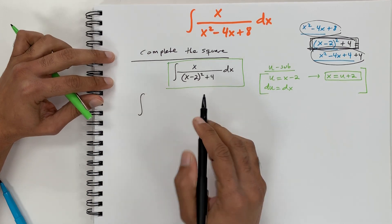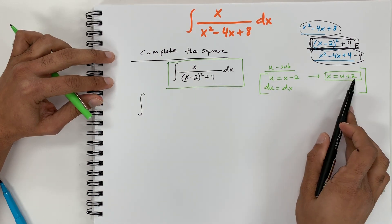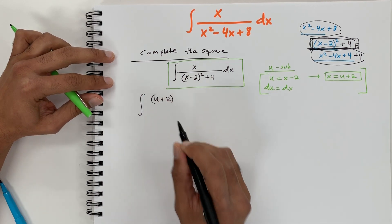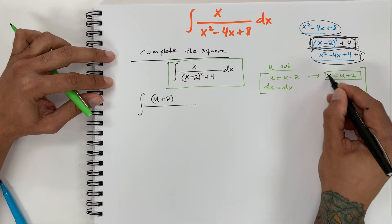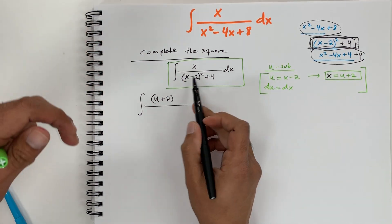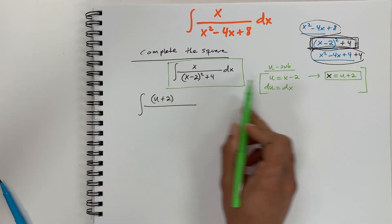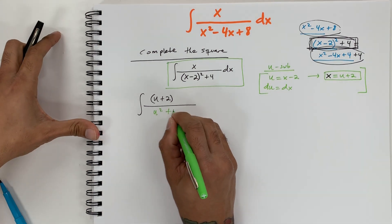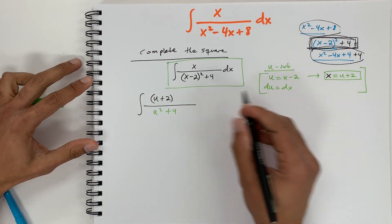Now let's substitute everything into our integral. We replace x on top with u plus 2, since we solved for x. On the bottom, x minus 2 becomes u, so we have u squared plus 4. And dx becomes du.